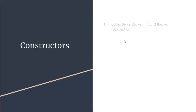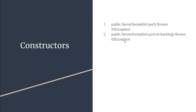The first constructor is public ServerSocket with argument integer port, and you will need to handle IOException. This constructor creates a ServerSocket that is bound to the specified port, or listening to that port. The second one is public ServerSocket with integer port and integer backlog, which also throws IOException.